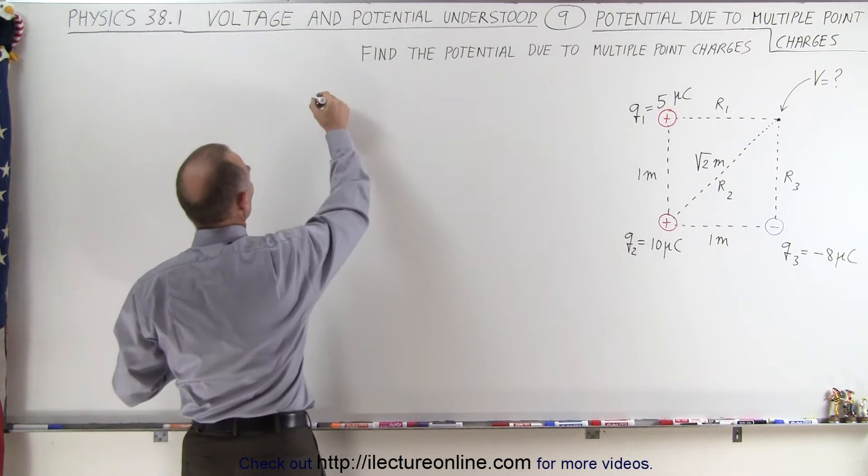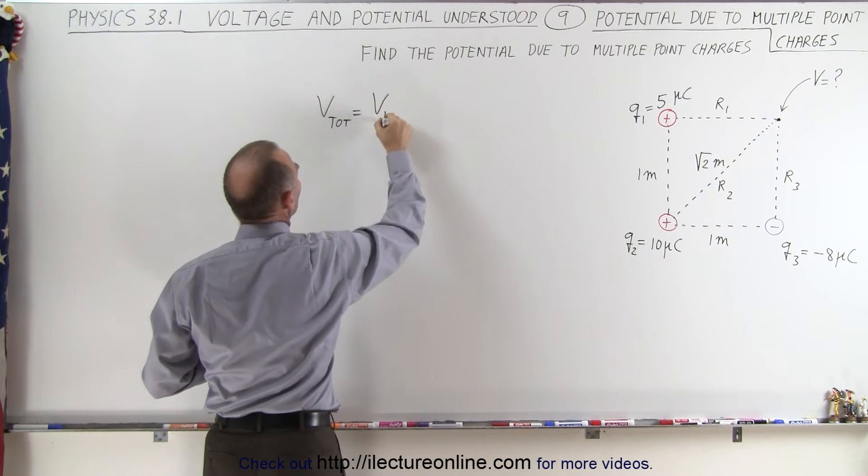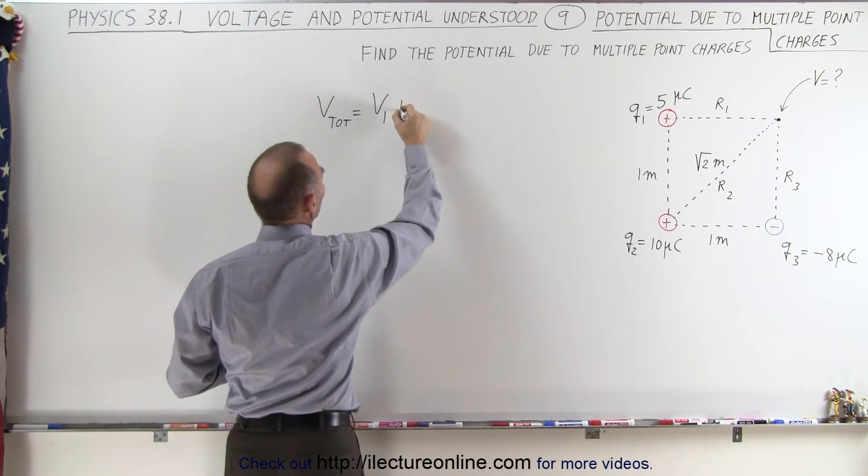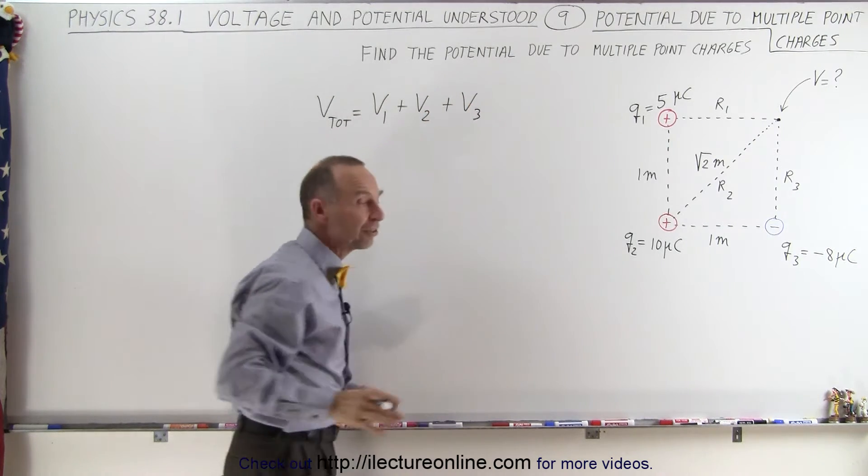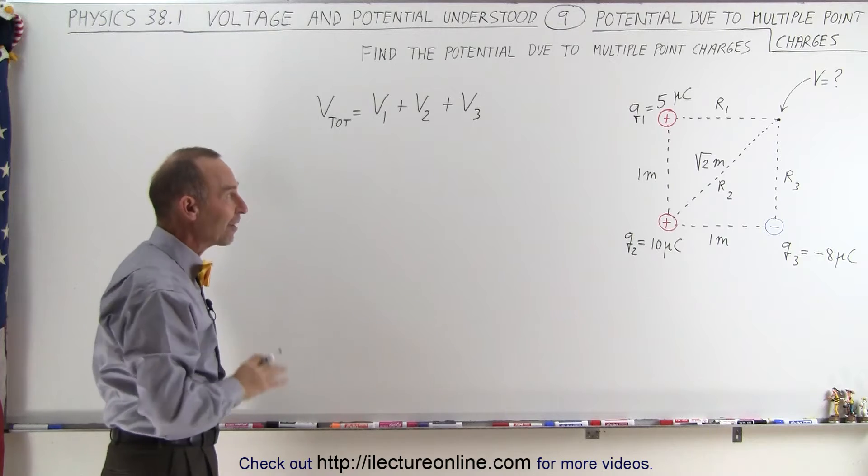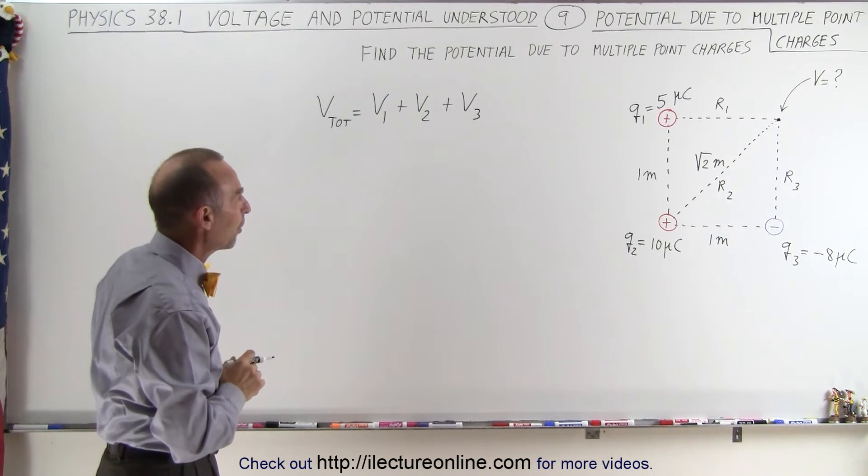So what we can say is that the total voltage is simply going to be equal to the voltage due to the first charge plus the voltage due to the second charge plus the voltage due to the third charge. And again, it's an algebraic sum, not a vector sum. So direction doesn't matter, only the distance away from the point.